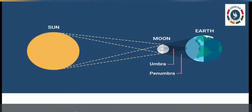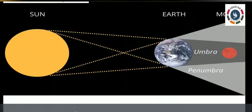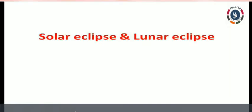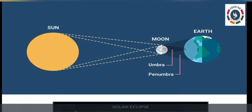Both solar eclipse and lunar eclipse occur because of these shadows. When the moon comes directly between the sun and the earth, the moon blocks the sunlight from reaching the earth and casts a shadow on the earth. This is known as a solar eclipse. A solar eclipse occurs on a new moon day.